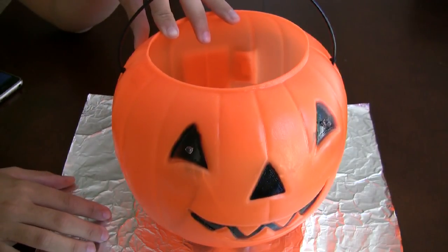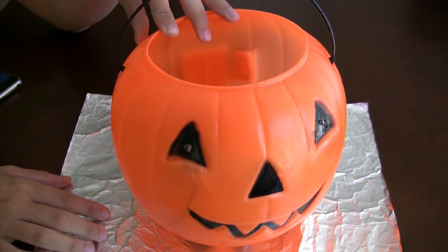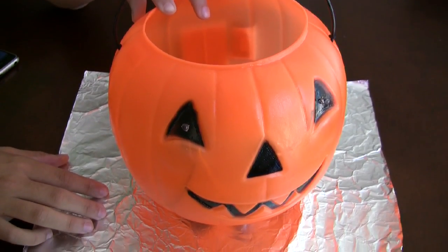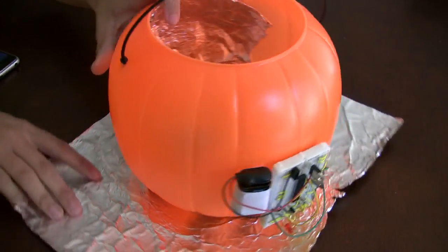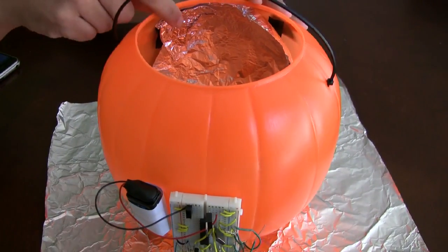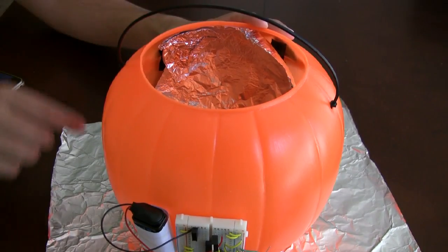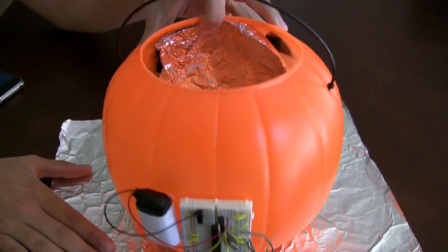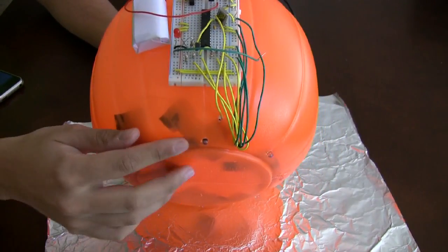There are many ways you could use this idea, but we chose to make a glowing candy bowl that would glow when someone reached their hand in. The physical construction is fairly straightforward. We tape one piece of aluminum foil behind the face of the jack-o-lantern and put another piece underneath it. Then, we just drilled a few holes for the LEDs.